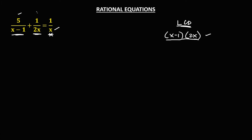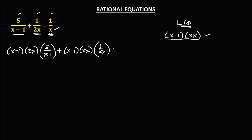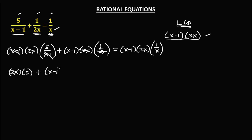Then multiply this LCD to every term. So we have x minus 1 times 2x, then times 5 over x minus 1, then plus the LCD, so x minus 1 times 2x, then times 1 over 2x, then equals x minus 1 times 2x, then times 1 over x. Then to simplify: we can cancel x minus 1, so we have 2x times 5. Then plus, cancel this 2x, and we have x minus 1 times 1. Then equals, cancel this x, so we have x minus 1 times 2 times 1.